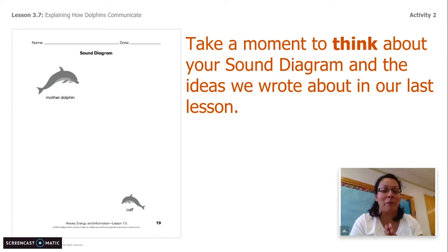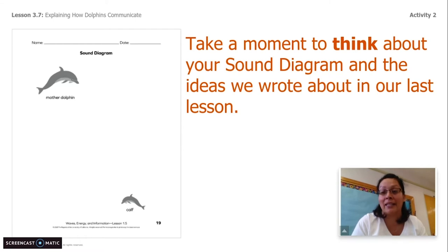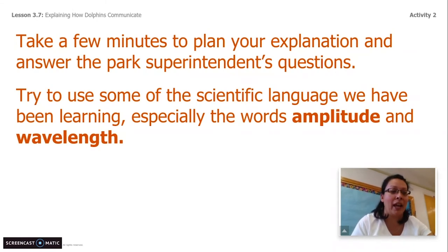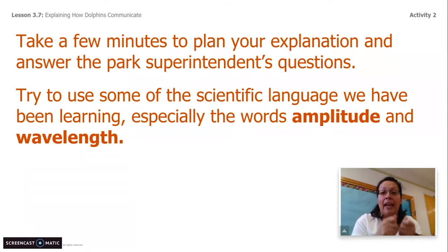Take a moment to think about your sound diagram and ideas we wrote about in our last lesson. We wrote about waveforms — remember, we had three of them. You needed to label the amplitude and pitch for three of them. I would grab that information from yesterday and then grab your sound diagram, because those are going to help you answer Maya Martinez's email. Take a few minutes to plan your explanation and answer the park superintendent's questions. Try to use some of the scientific language we have been learning, especially the words amplitude and wavelength. If you want, talk to someone in your house, rehearse it — find your mom, your brother, your cousin — write out what you're going to say and then say it out loud and make revisions so that you can go ahead and answer the questions.